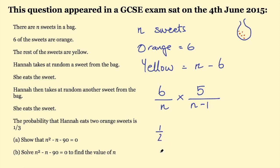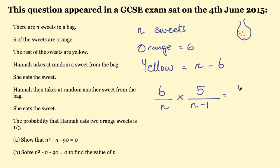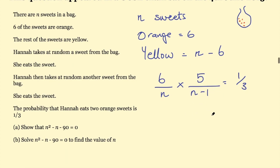For example, if I flip a coin twice, the chance of one head is one half, and the chance of another head is one half, so the chance of two heads is one quarter. Here, the probability of eating two orange sweets is one third, so I multiply the two probabilities and set that equal to one third — I've created an equation, because part a asks me to show an equation.